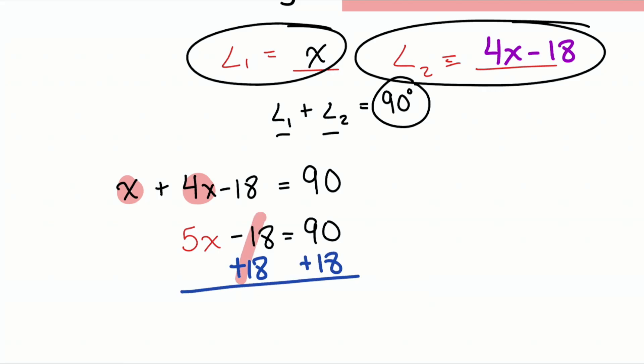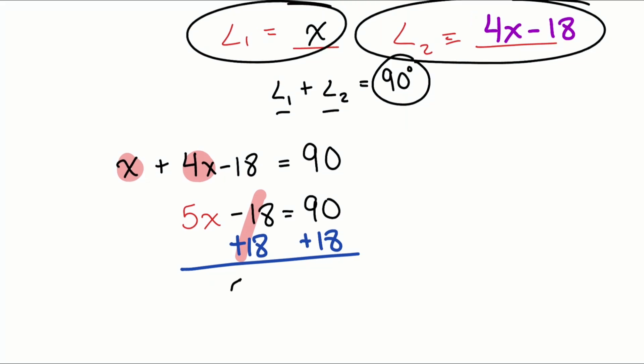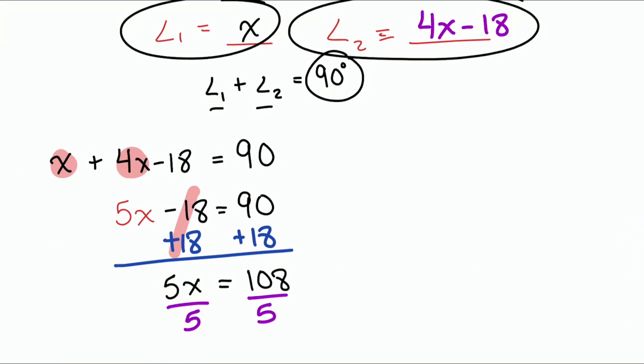And so now we have 5X equals 108. So now the last move that we're going to make here to find the value of X is to divide both sides by five. And I'll go ahead and do that long division right over here.